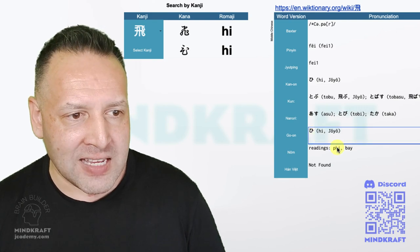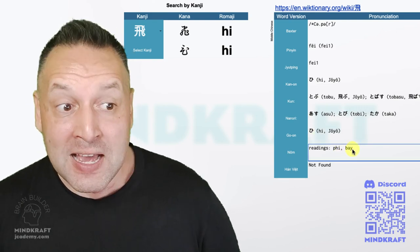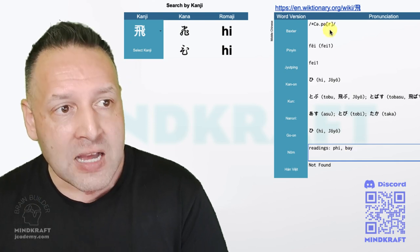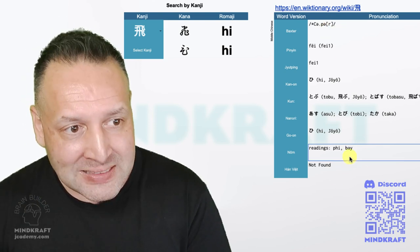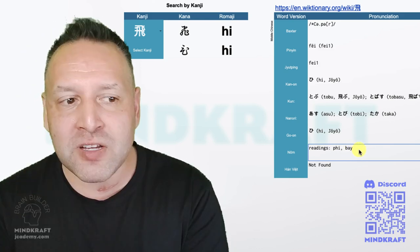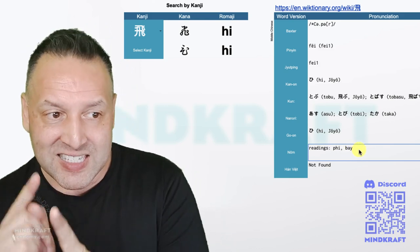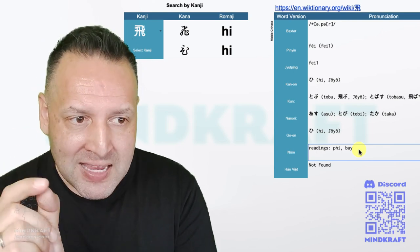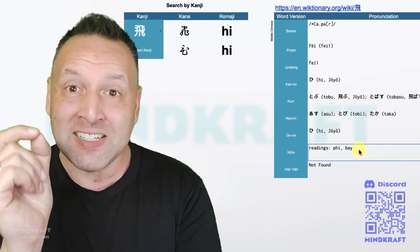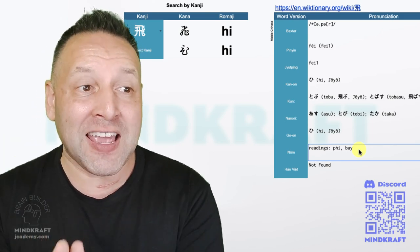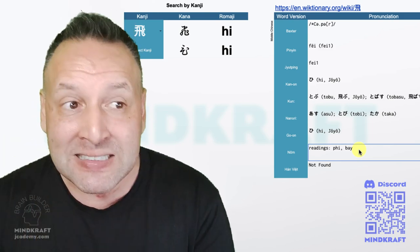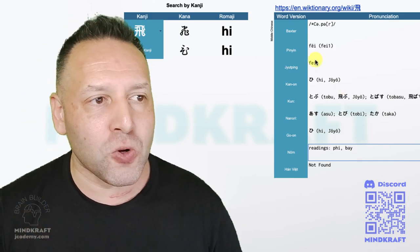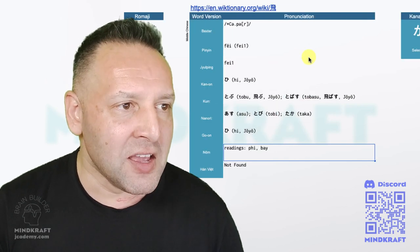And then if we have a look down here, we have fei and bay. By, the word in Thai for fly is bin. So this could have come from pwarl, pwain, pwain, bay, bin. They're very similar. I think that probably Thai has the same etymology for the word bin is the same as bay in Vietnamese, which is the same as hi in Japanese, which is the same as fei in Mandarin, which is buan in middle Chinese. All mean to fly. That's amazing.